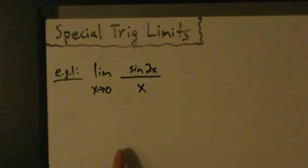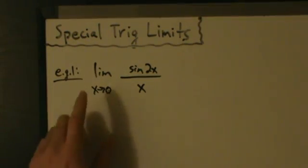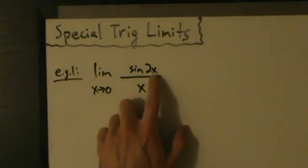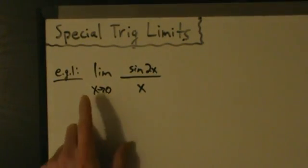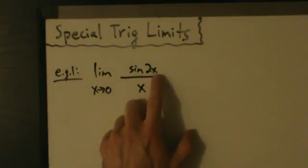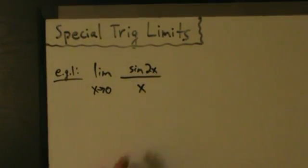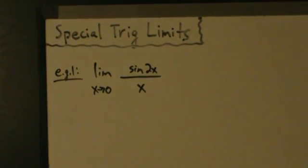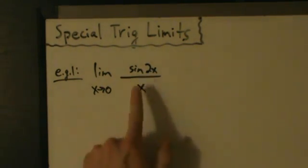The idea is we want to manipulate this algebraically so that what's in the sine argument, what's in the denominator, and what's in the limit are all the same thing. The special trig limit is limit as x goes to 0 of sine of x over x — we want those to match. Right now we have x in the limit, x in the denominator, and 2x in the sine, so let's make the denominator into 2x by multiplying top and bottom by 2.